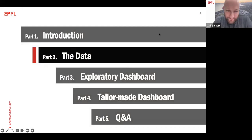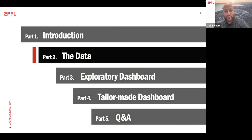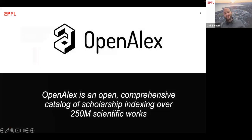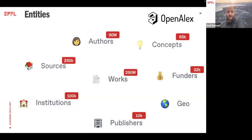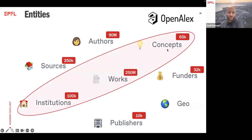I will first present the data that we are using — so it's, of course, related to OpenAlex. Then we will demo two different dashboards: the exploratory one and the TaylorMade one, and I will explain the difference. Then we will go into the Q&A session. OpenAlex is a comprehensive catalog of scholarship indexing over 250 million scientific works. There are different entities on OpenAlex: the most central one is the scientific work, but you also have institutions, sources, authors, and publishers. Today we will really focus on works, institutions, and concepts — these are the three entities we are using on the dashboard.